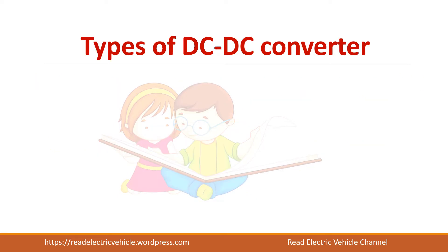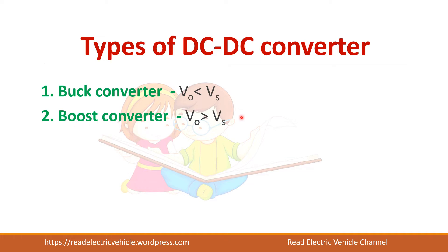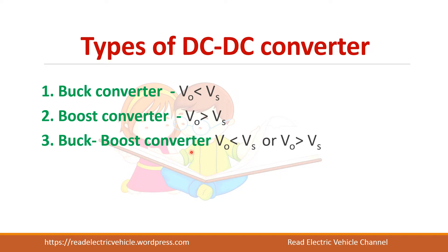Basically, there are three types of DC-DC converters. One is called a buck converter, which is a step-down converter, because it produces a voltage less than the input voltage. Next is a boost converter, which is a step-up converter producing an output voltage greater than the supply voltage. The third is a buck-boost converter, which can produce a higher or lower output voltage depending upon the duty cycle. Apart from these three types, there are also other types like the Cuk converter.